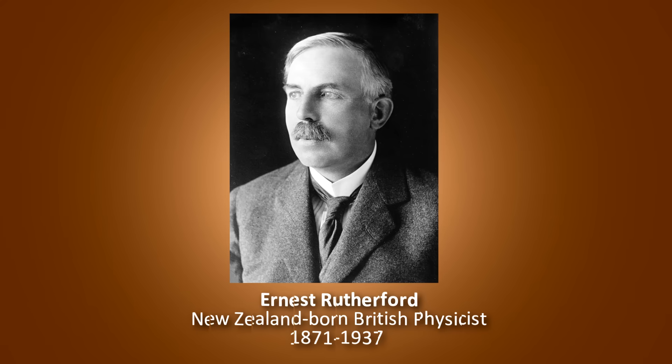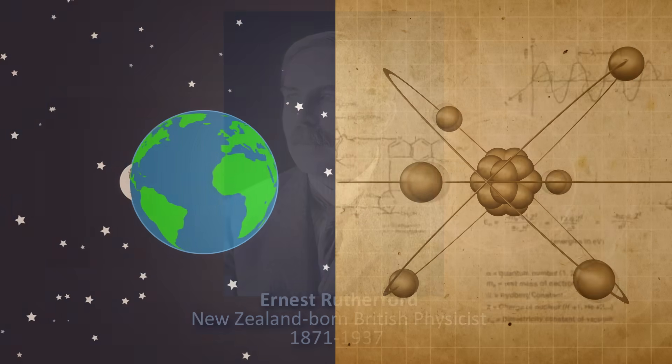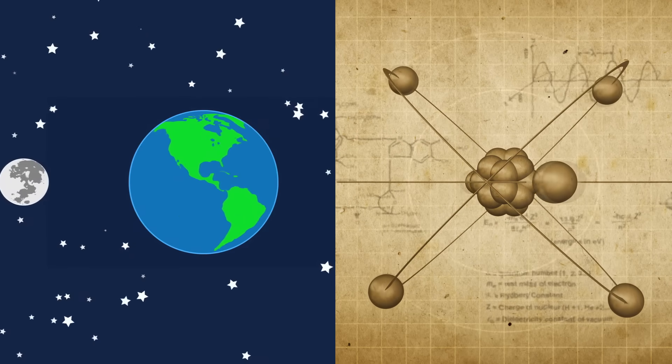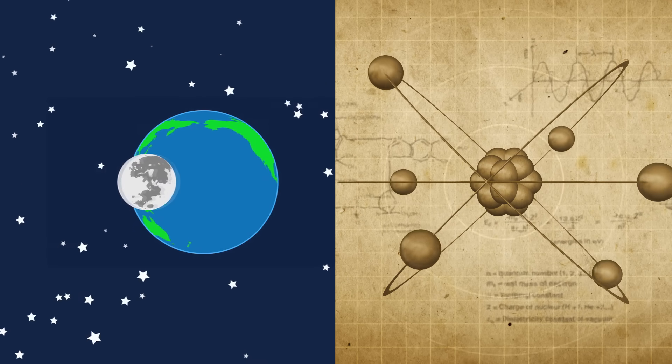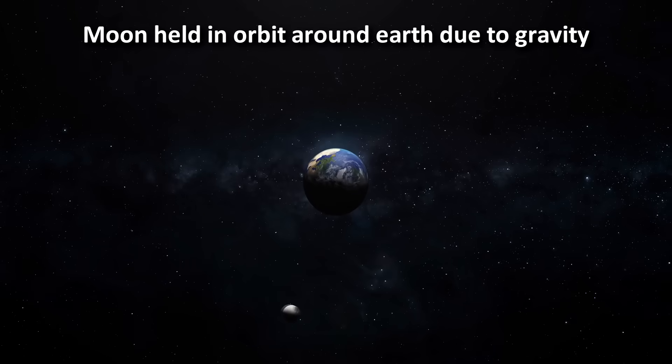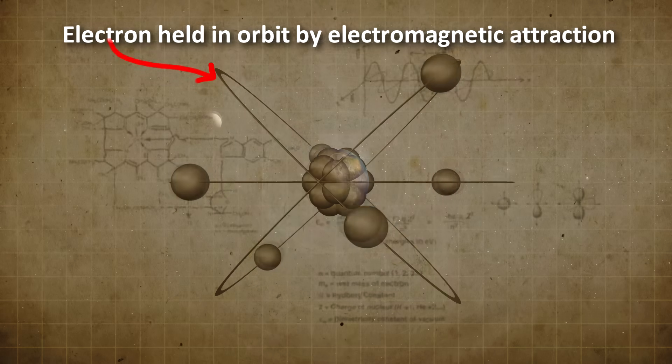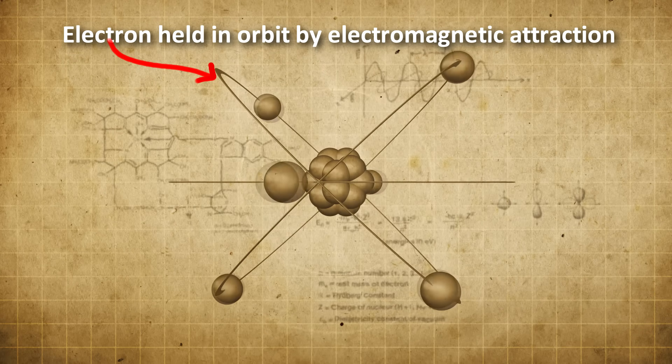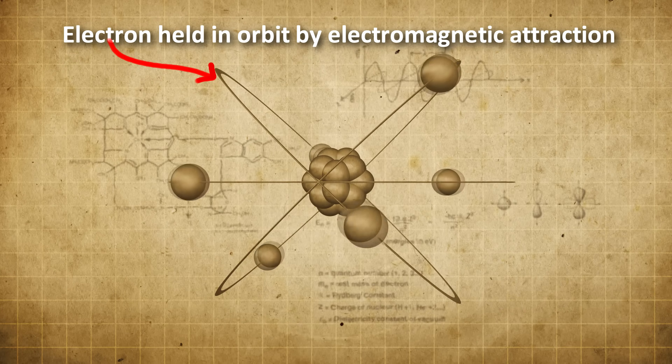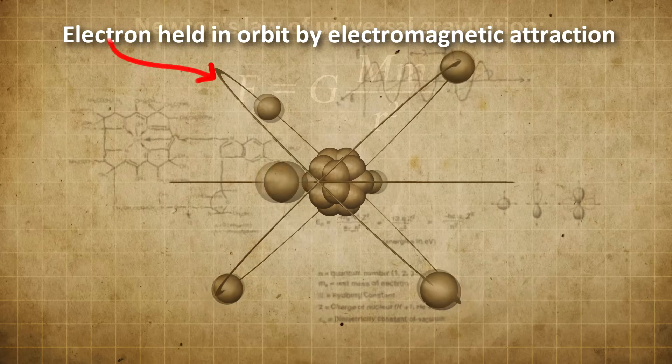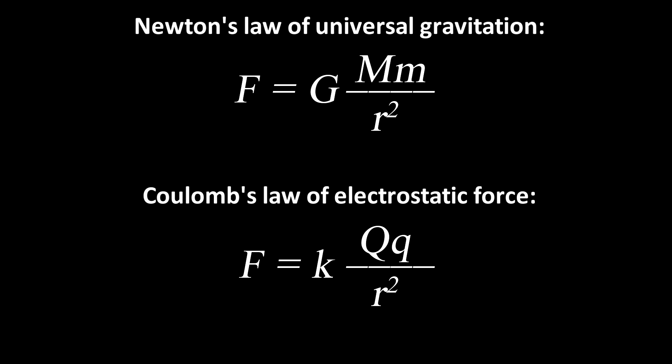In 1911, Ernest Rutherford proposed a planetary model of the atom. According to the model, the solar system and the atom were almost identical. Just like the moon is held in orbit around the earth due to gravity, the negatively charged electron was held in orbit around a positively charged nucleus. The attractive force was electromagnetism instead of gravity, in the case of the atom. This seemed to make sense because Isaac Newton's laws of universal gravitation was almost identical to Coulomb's law for electric force. This was beautiful. A fantastic symmetry of nature.